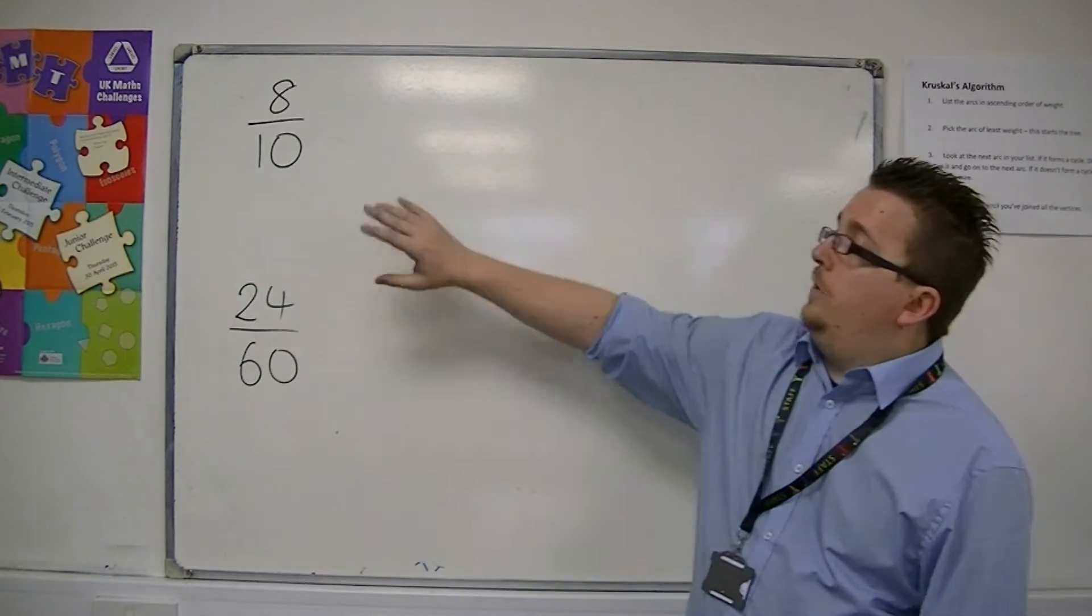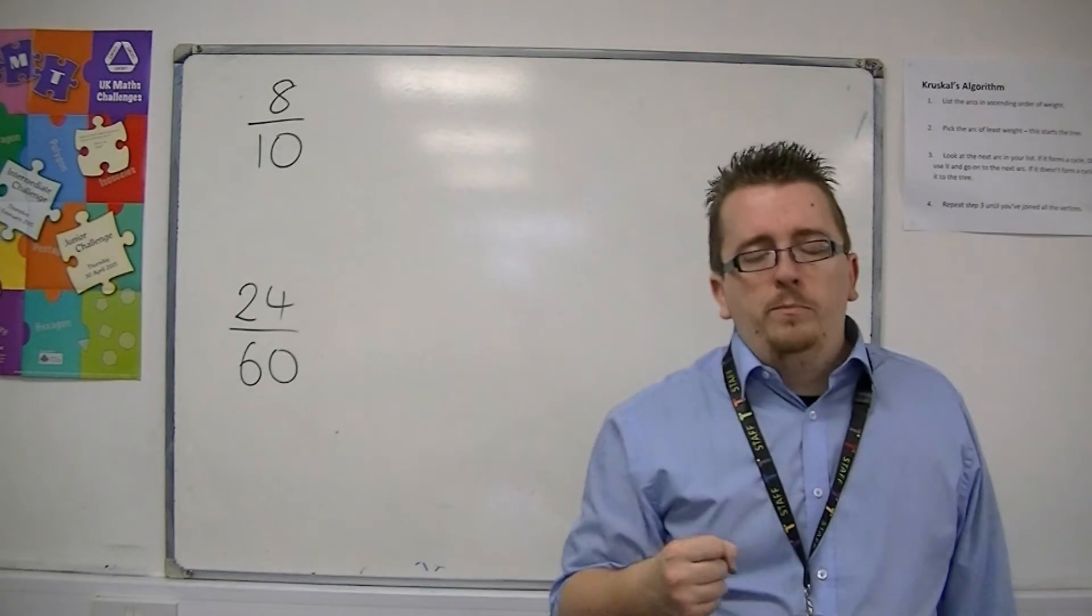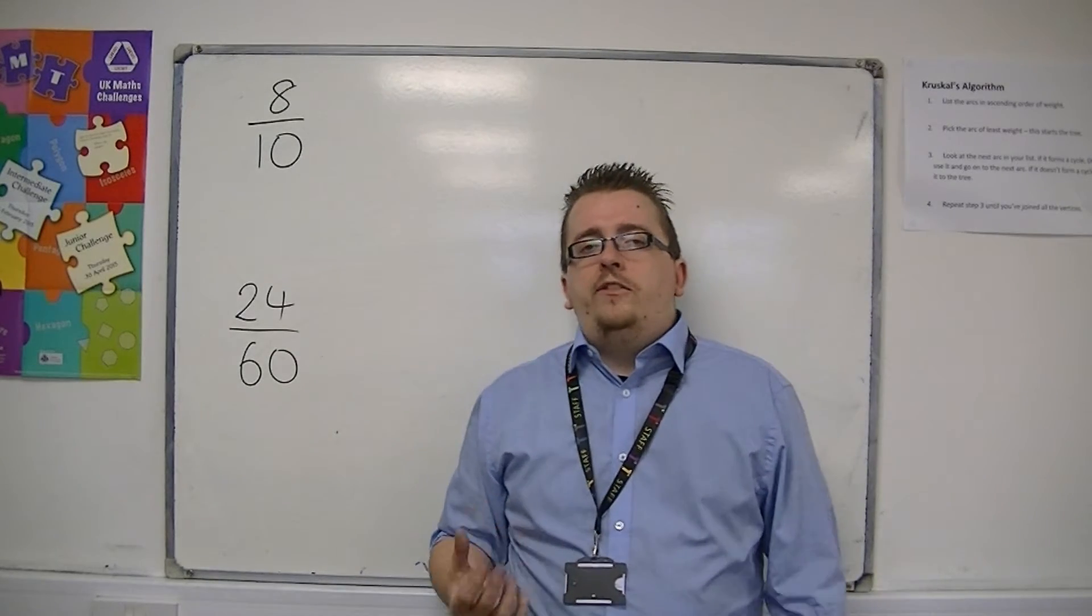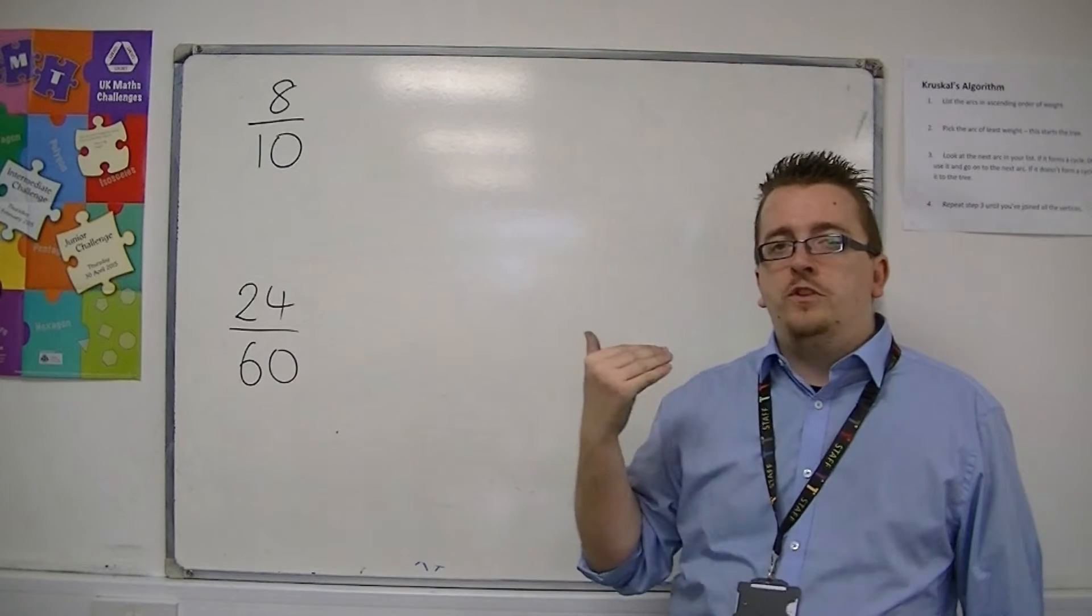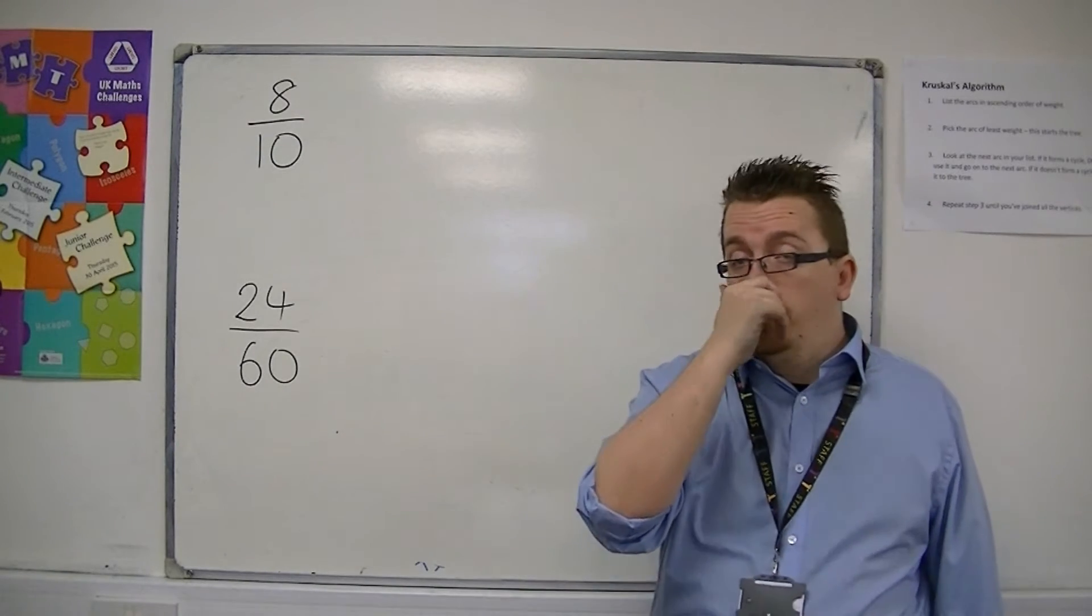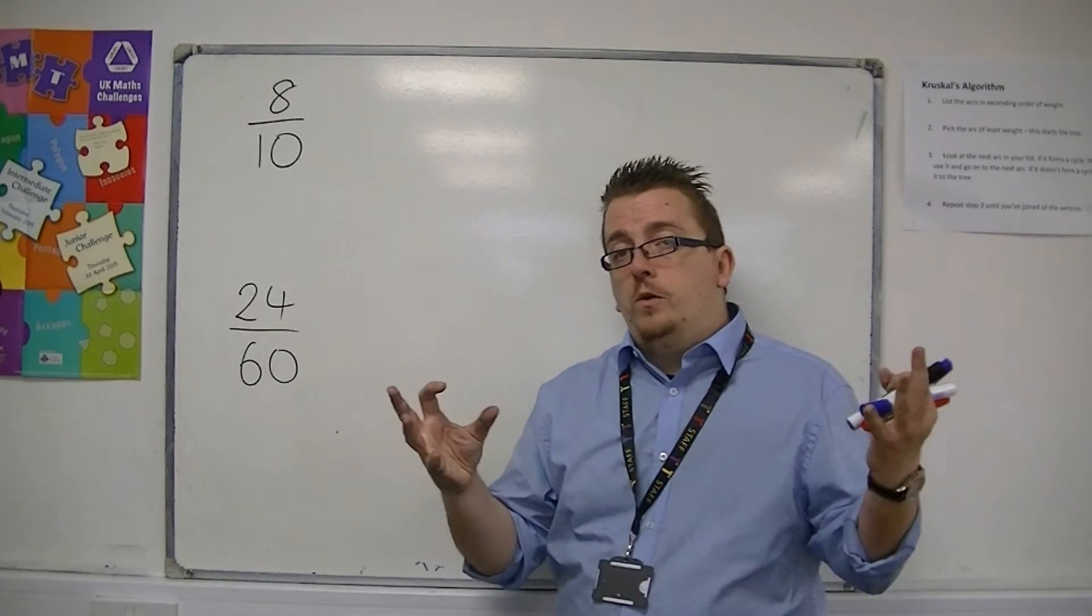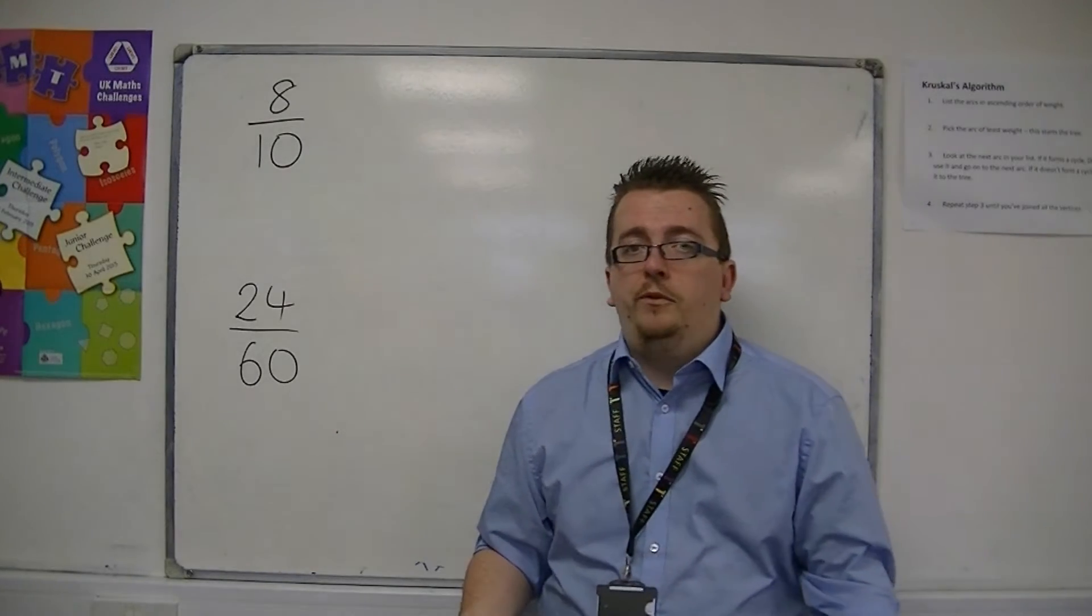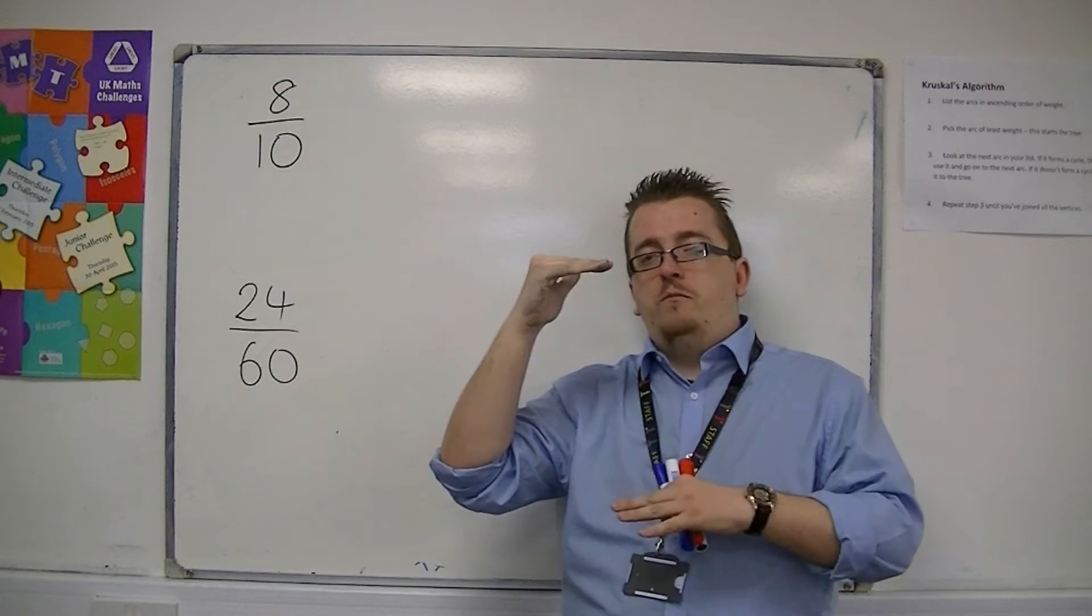So we're going to start with 8 tenths. The way to simplify a fraction, and what our end goal is, is to be able to divide both top and bottom of the fraction by a whole number with zero remainder. So there is not going to be any remainder, we're not going to go into decimals, so we remain with a whole number on the top and a whole number on the bottom.